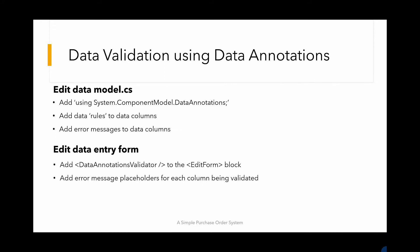To use data annotations, there are two basic steps we need to do. We need to edit the data model and we also need to edit the data entry form. In the data model itself, we need to add 'using System.ComponentModel.DataAnnotations' to the top of the file, and then we need to add rules to the data columns and add validation messages to the data columns. In the form itself, we need to add DataAnnotationsValidator to the EditForm block, and then put error message placeholders for each column being validated.